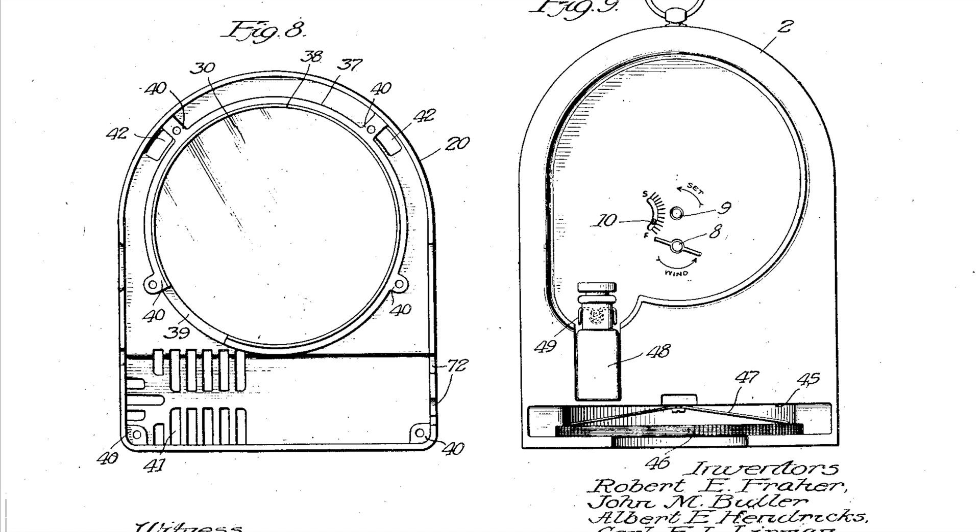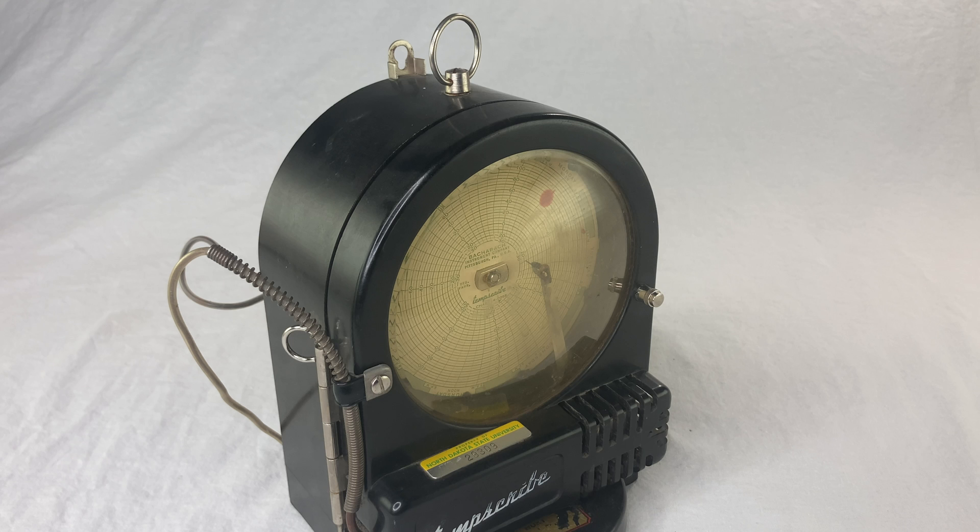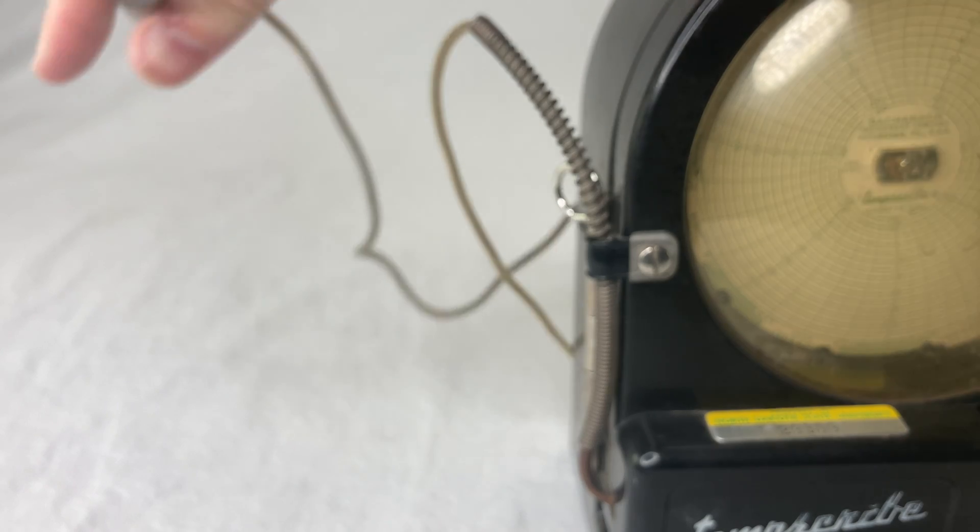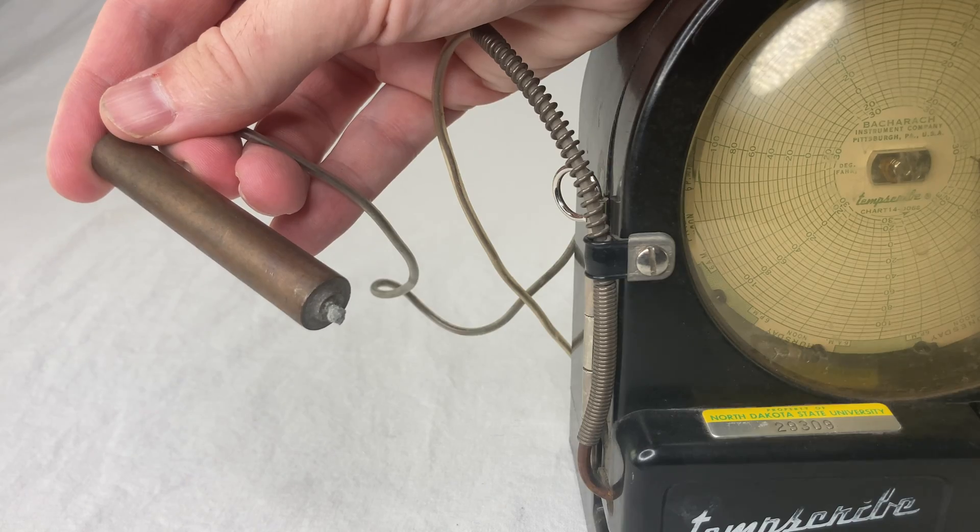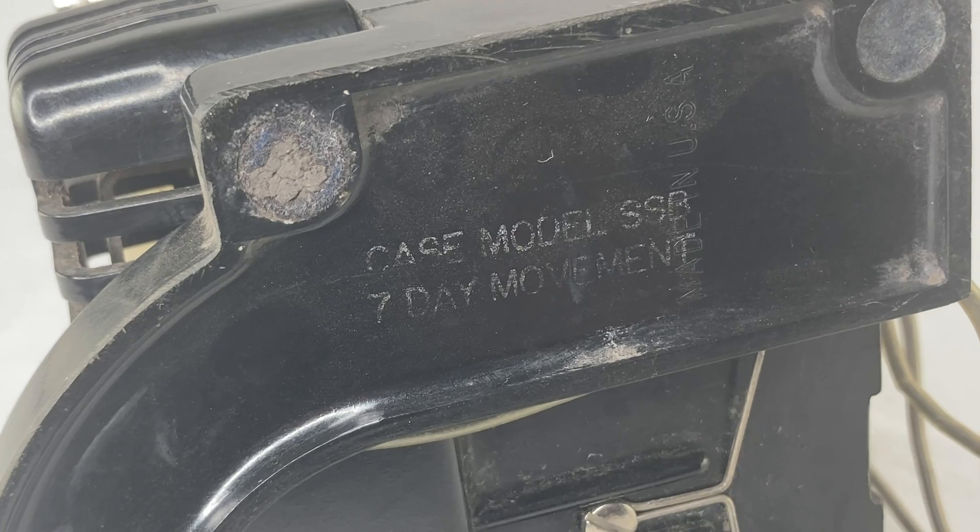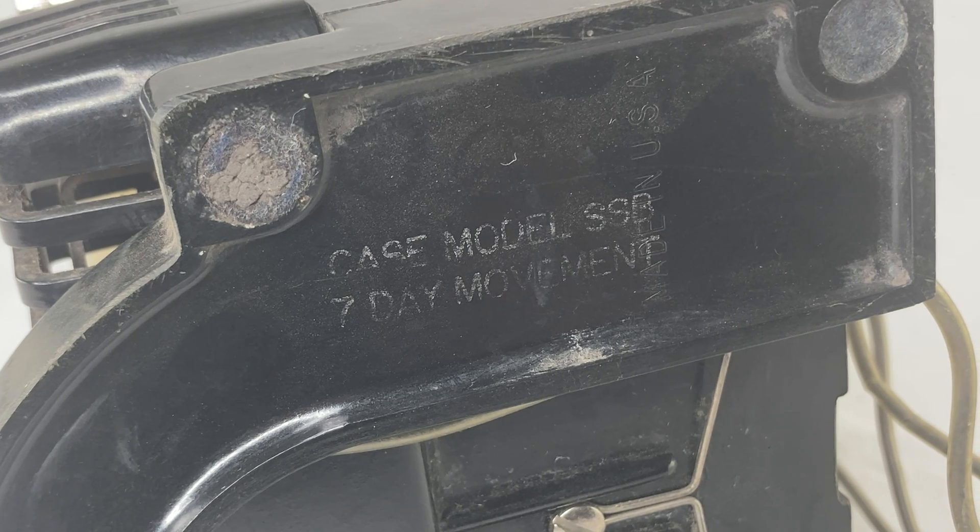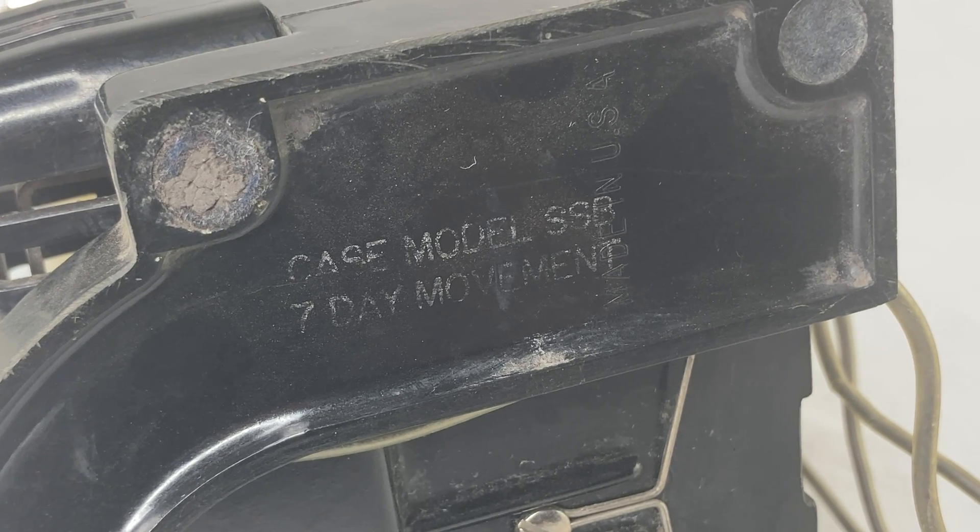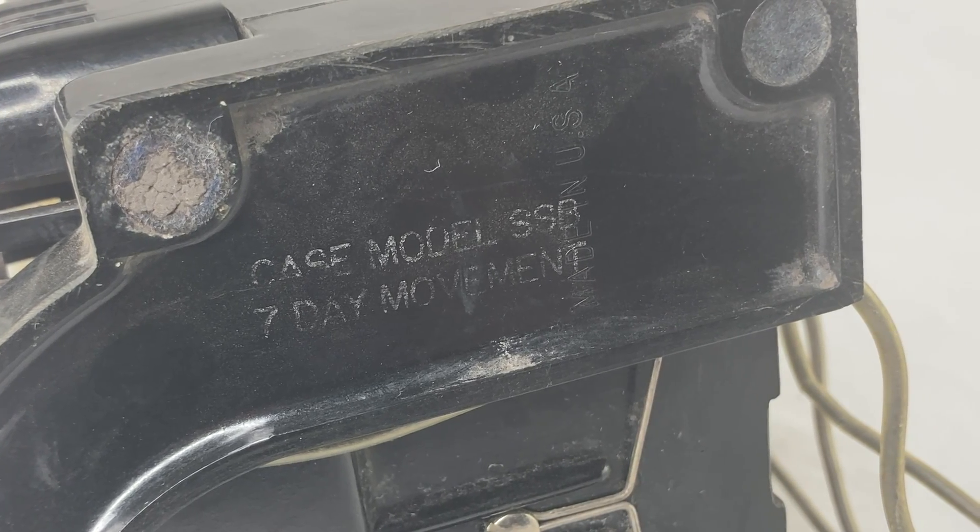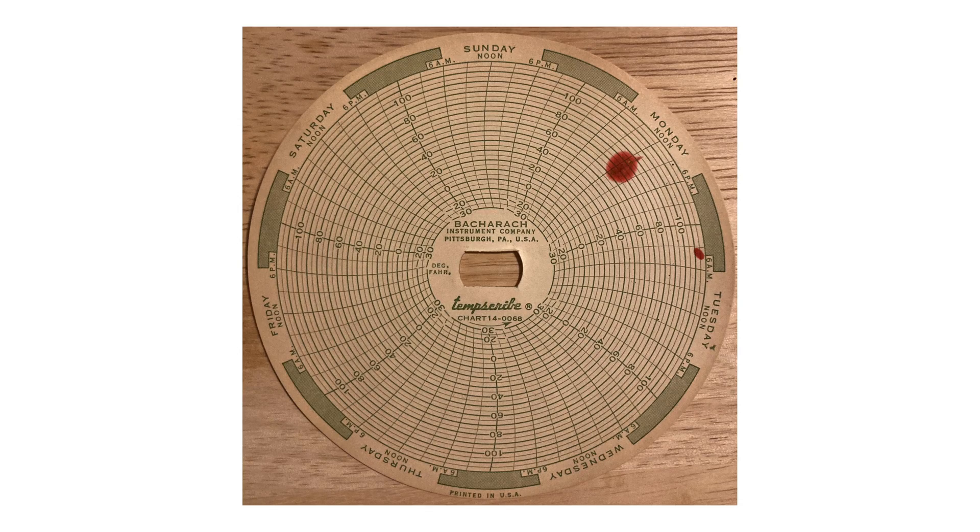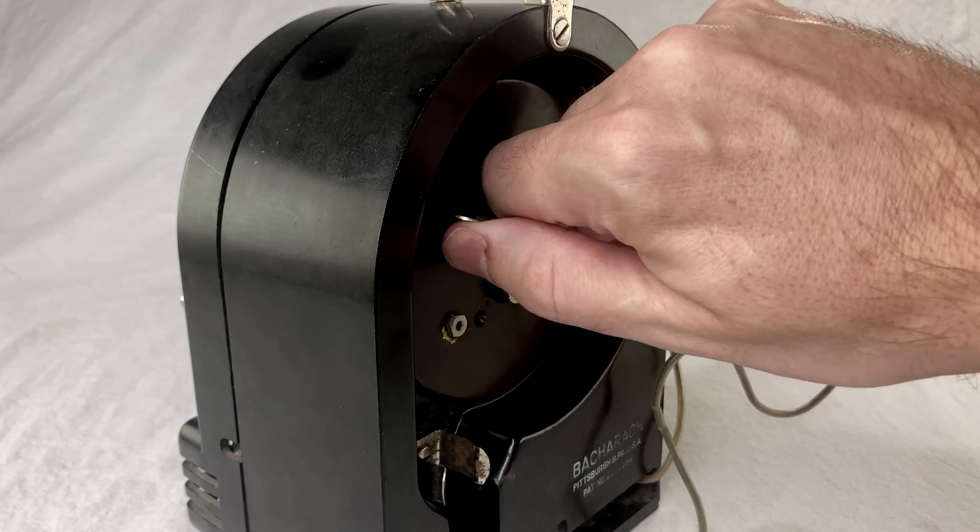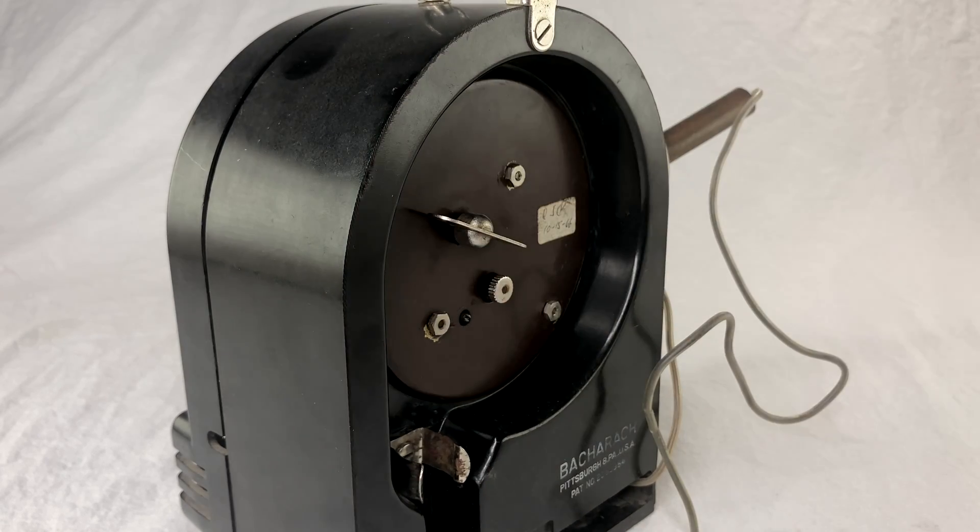Actually, my journey with the Tempscribe is a bit fraught. I got this one on eBay. This model comes with the temperature probe, and it has seven-day movement. That means you wind it up, and it ticks down for seven full days before stopping. And the chart paper has a whole week on there. But the clock mechanism is jammed on this one. It's wound up all the way, and it won't tick down.